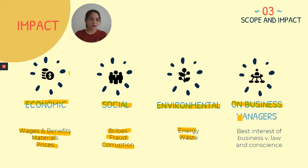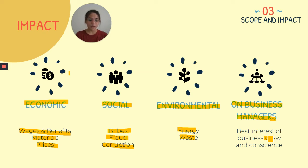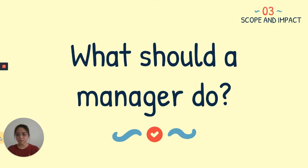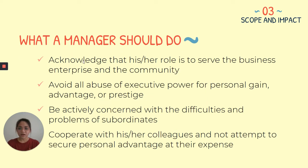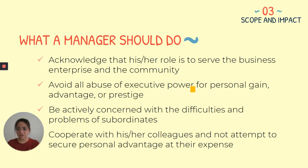For the impact on business managers, there is a tension between the best interest of the business versus the law and conscience of the business managers. Business managers are expected to always act for the best interest of the company. However, they cannot always be expected to do so, especially when such interests are contrary to their own principles. A manager should acknowledge that his or her role is to serve the business enterprise and the community. He or she should avoid abuse of executive power for personal gain, advantage, or prestige. A manager should also reveal to his superior whenever personal or financial interests conflict with those of the company.